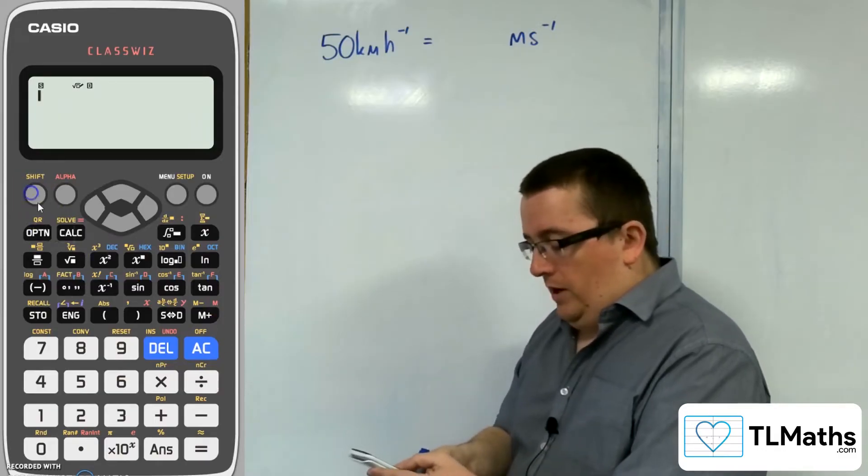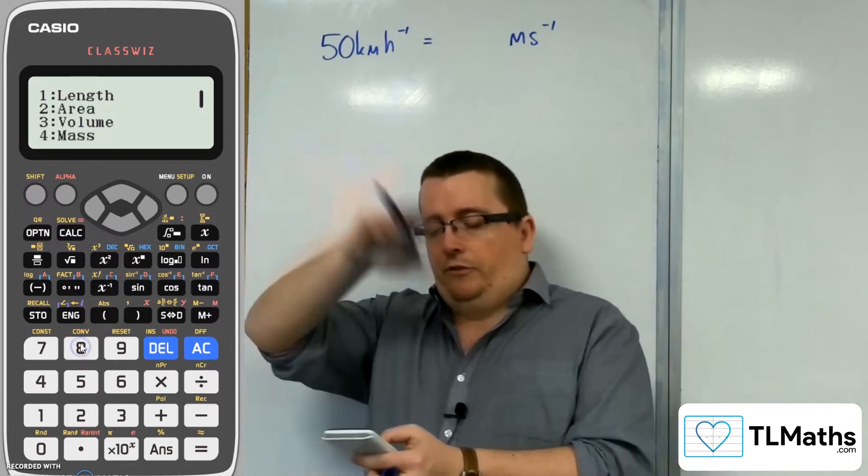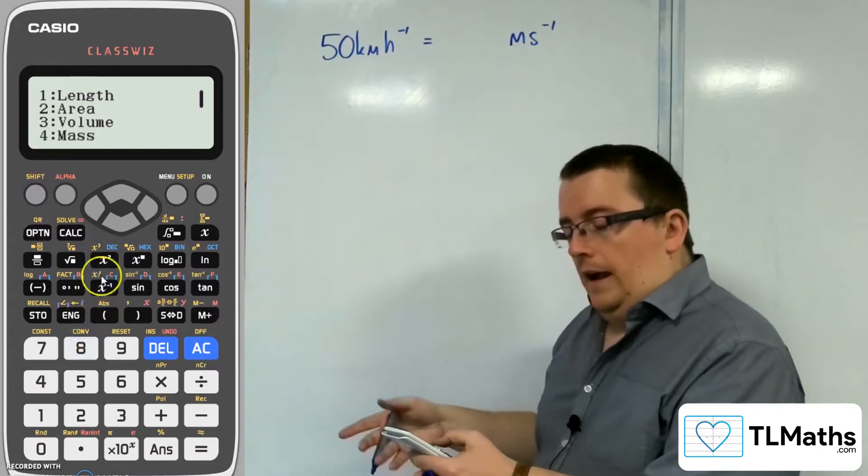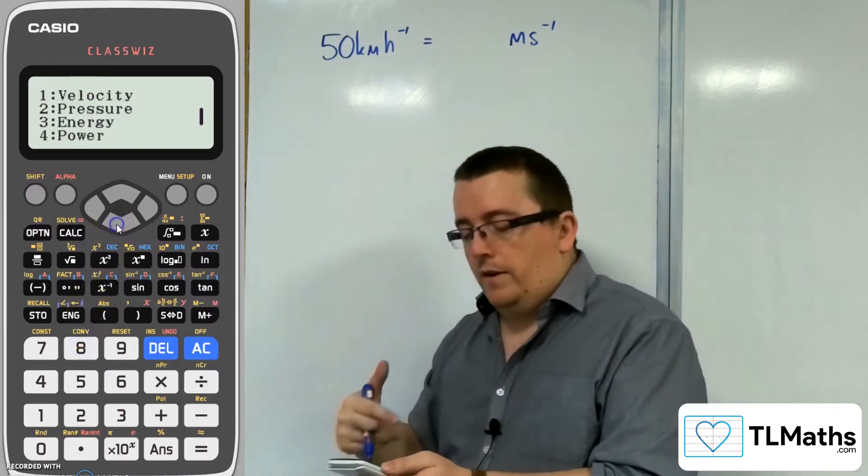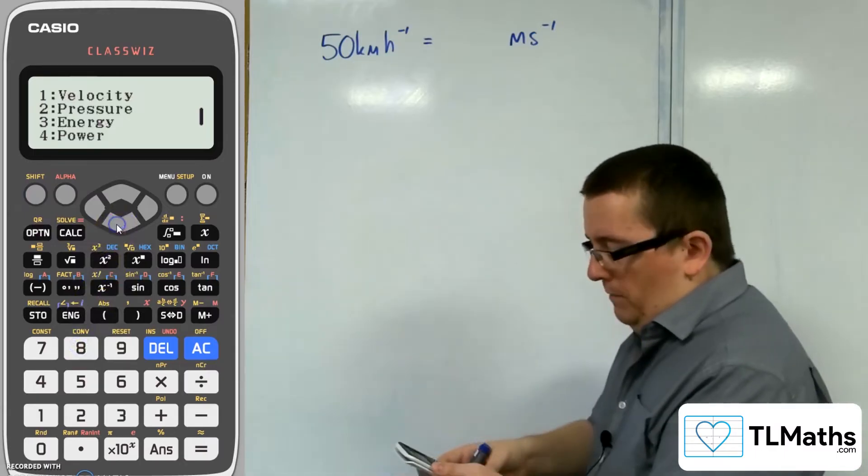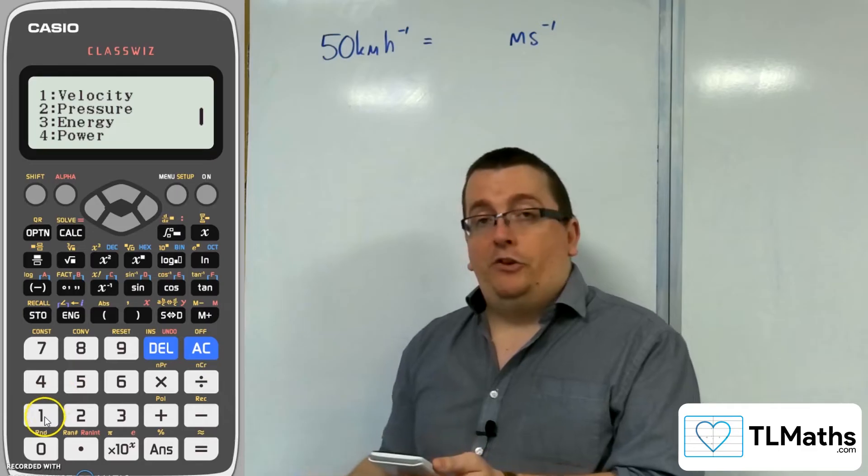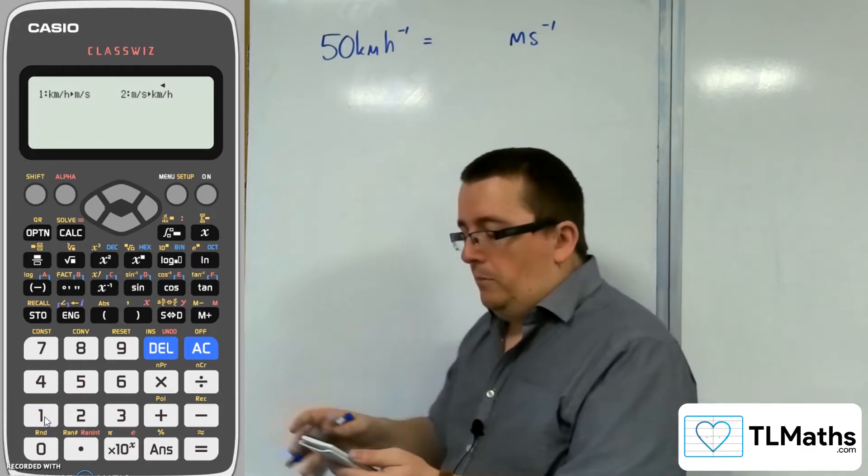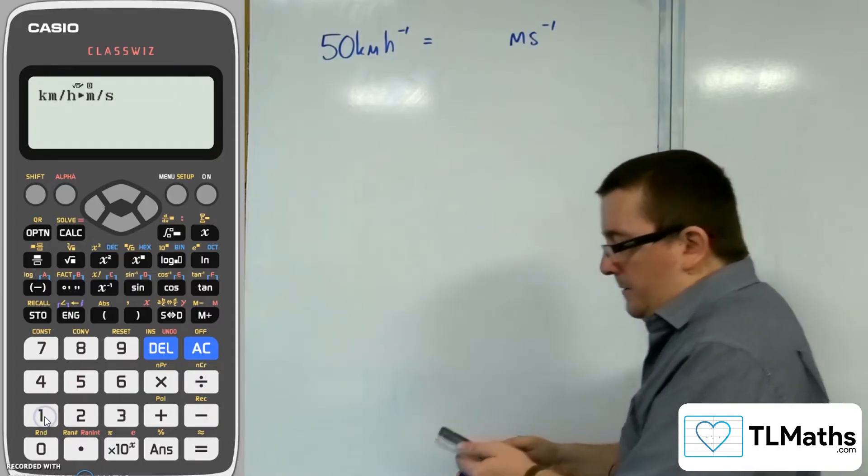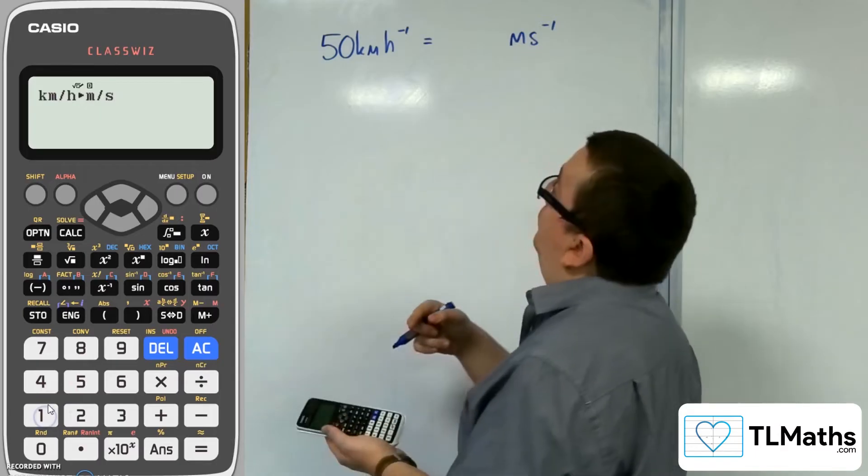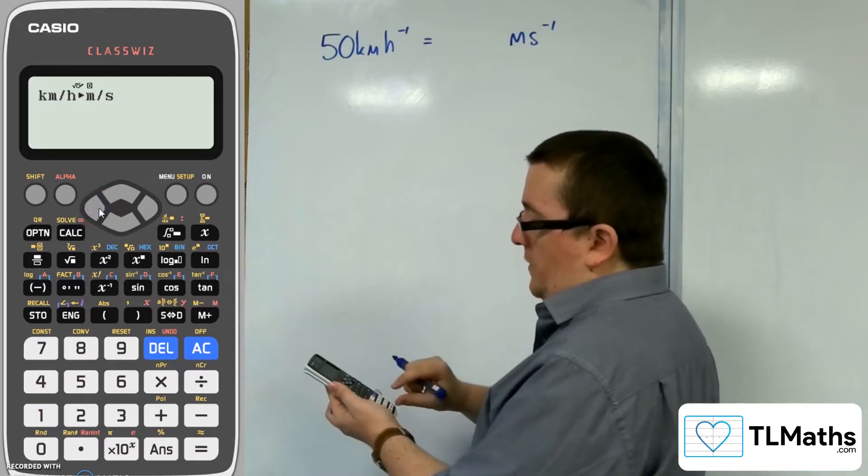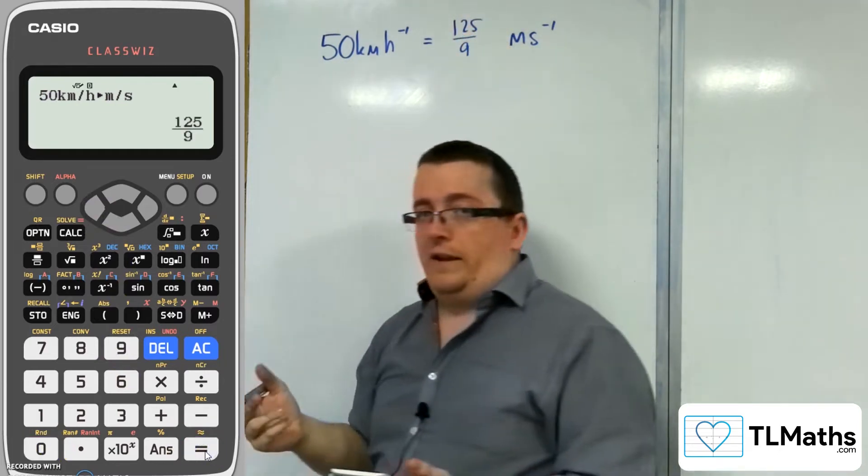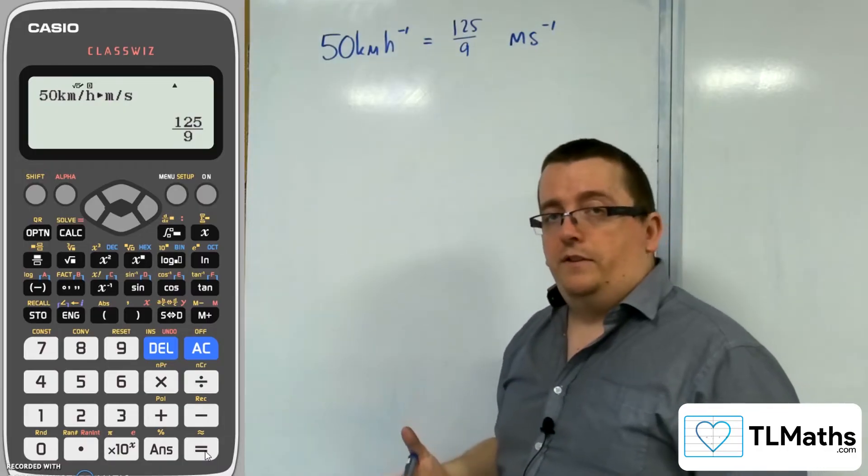If I go to shift, then number 8, you'll see there's a whole list of different things that you can convert. The most useful I found is if you scroll down to number 1, you get velocity. If I click velocity, there are now two options: kilometers per hour to meters per second, and meters per second to kilometers per hour. I'm going to go with number 1. You've got to scroll to the left, press left on your calculator and then type 50, press equals, and it'll come out with 125/9 meters per second.